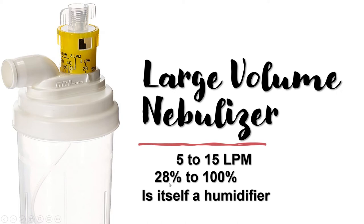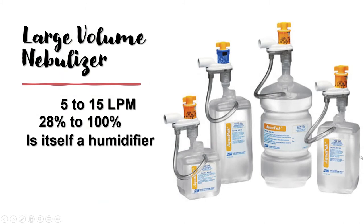The large volume nebulizer can be used at a flow rate of at least 5 to 15 liters per minute and can deliver an FiO2 between 28 to 100 percent. By definition, the large volume nebulizer — also known as an all-purpose nebulizer — is itself a humidifier because this part is filled with sterile water. Oxygen enters the device through here, connected to your flow meter, and goes out from here to be connected to a breathing circuit or large bore tubing. This design is the reusable one.